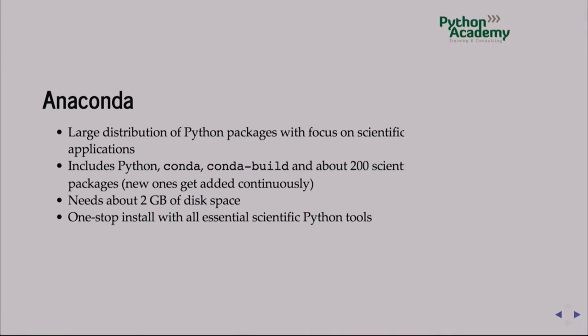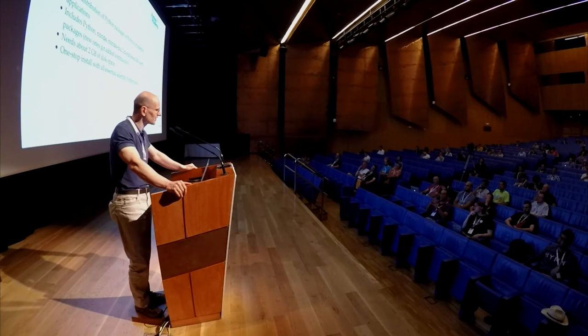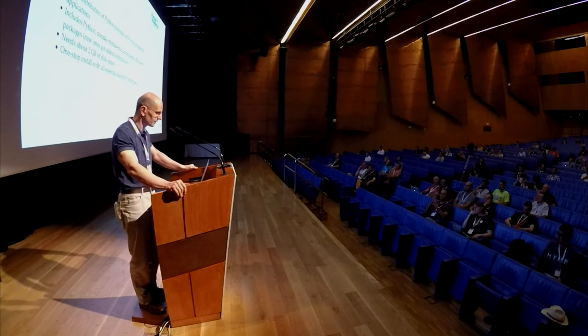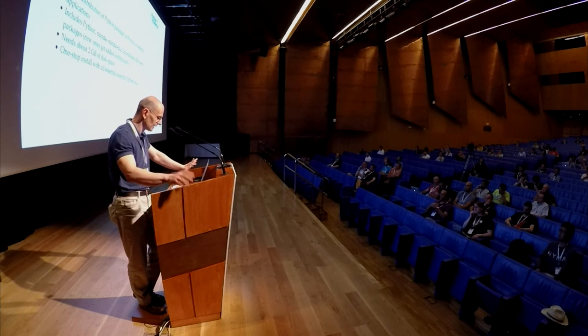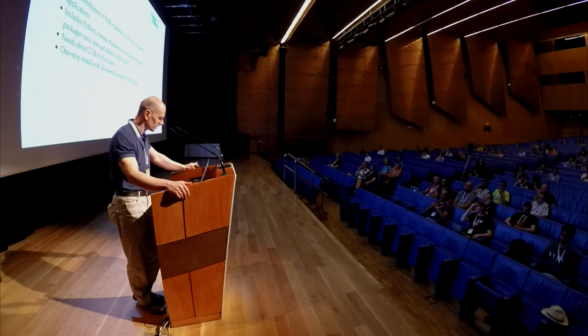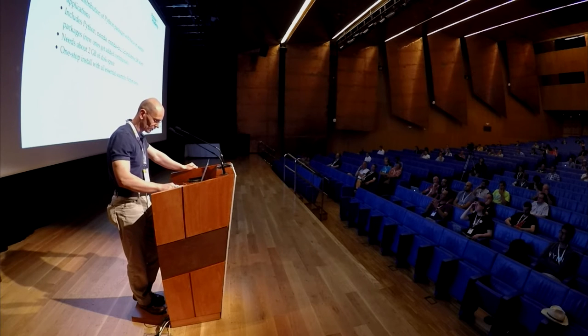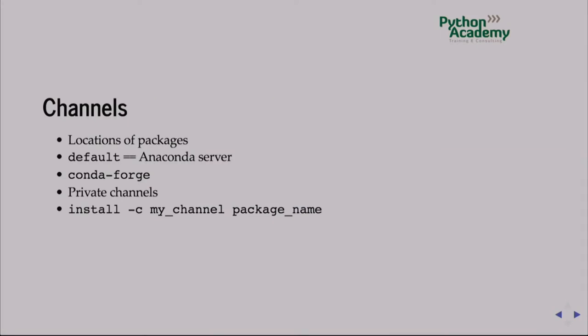There's also something called Anaconda, which is a different thing — it's a distribution, similar to a Linux distribution. You get Python packaged up with a bunch of scientific applications. It includes Python, Conda, and about 200 scientific packages. If you install it, it takes about two gigabytes of hard drive space. But a lot of scientists need all those tools and don't have to fiddle around installing them separately. Disk space is cheap and programmer time is expensive.